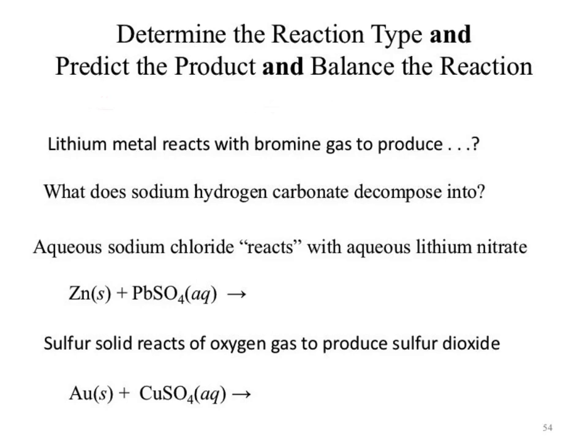The very next one says 'lithium metal' — it's just words. We have to read and translate that information into chemistry. Step one: translate the words into atomic symbols. Lithium metal: Li, solid. Reacts with: plus. Bromine gas: Br2. Why are we saying two? It's not because it is a gas — it's because it's a diatomic element, like O2 or N2.